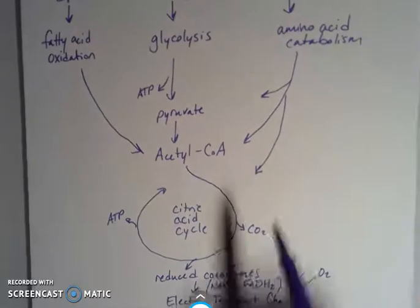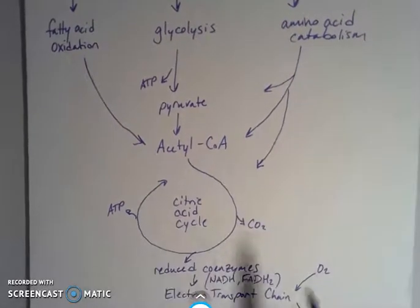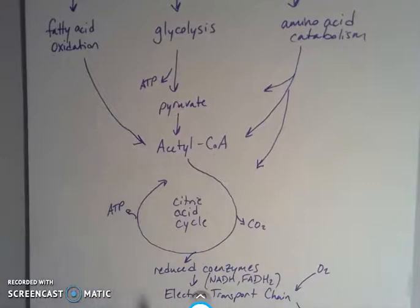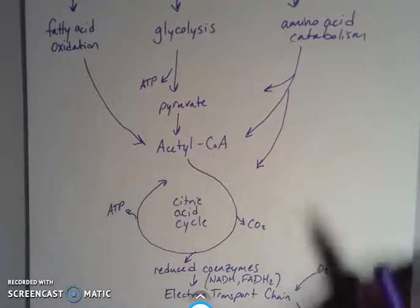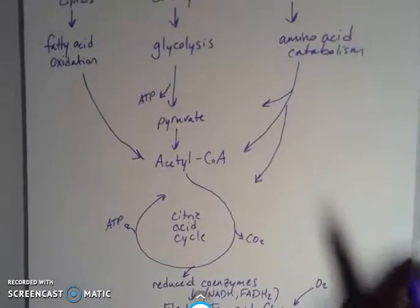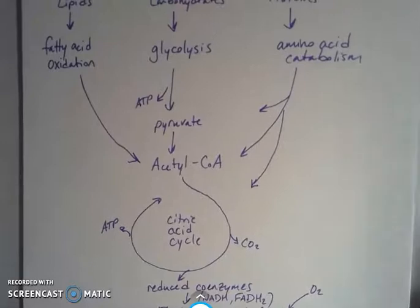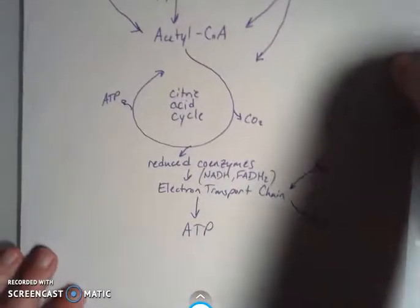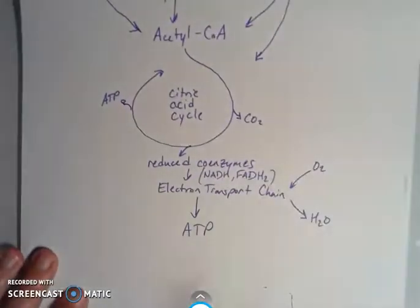Some amino acids fall in as products directly into the citric acid cycle, so we can skip over the first parts and jump right in mid-cycle. When we do, the same cycle happens — we're exhaling carbon dioxide, we're producing a little bit of ATP there, but not nearly as much ATP as we produce after the electron transport chain.